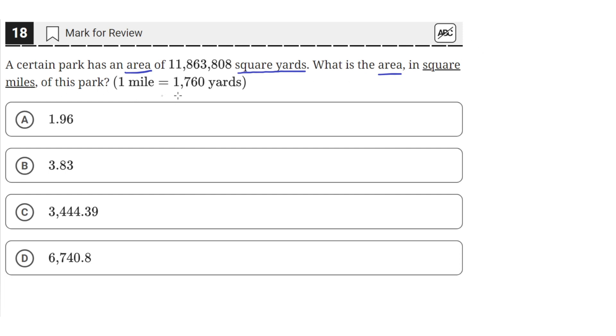We know that one mile equals 1,760 yards. So if we have, say, a square, and it's one mile on each side, that means it's also 1,760 yards on each side.